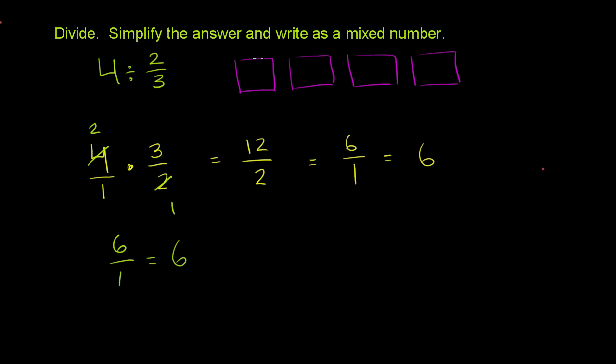So the first group is going to have 2 thirds of a box in it. It's going to have 2 thirds of a box. Now the next group is going to have 2 thirds of a box, so it'll have 1 third from here and then 1 third from the next box. Then the next group is going to have 2 thirds of the box, there's 2 thirds left right over here.